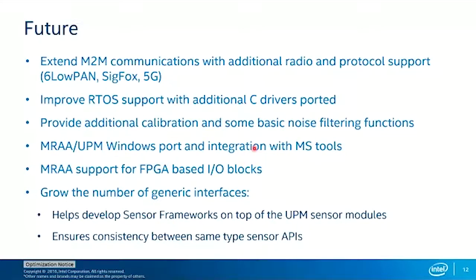Another big thing for us is supporting some FPGA-based IO blocks — the fog computing idea of bringing more computing power to the edge where you deal with sensors. FPGAs can accelerate your workloads quite a bit. We'd really want to give you at least a pass-through to allow you to interact with those FPGAs from our own APIs. If you develop on a Linux board and then move to a more powerful FPGA board using the same API, that gives you the portability that a lot of developers are looking for — the less code you have to change to switch boards, the faster you can deploy.